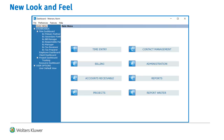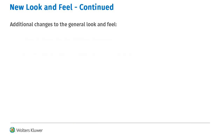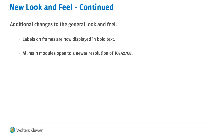When opening Practice Management to the main menu, you will notice a new look and feel. The icon links have a new look, and the left navigation has a blue background with white text in all modules. Some additional changes include all labels on frames are now bolded, and all main modules open to a newer resolution at 1024x768.